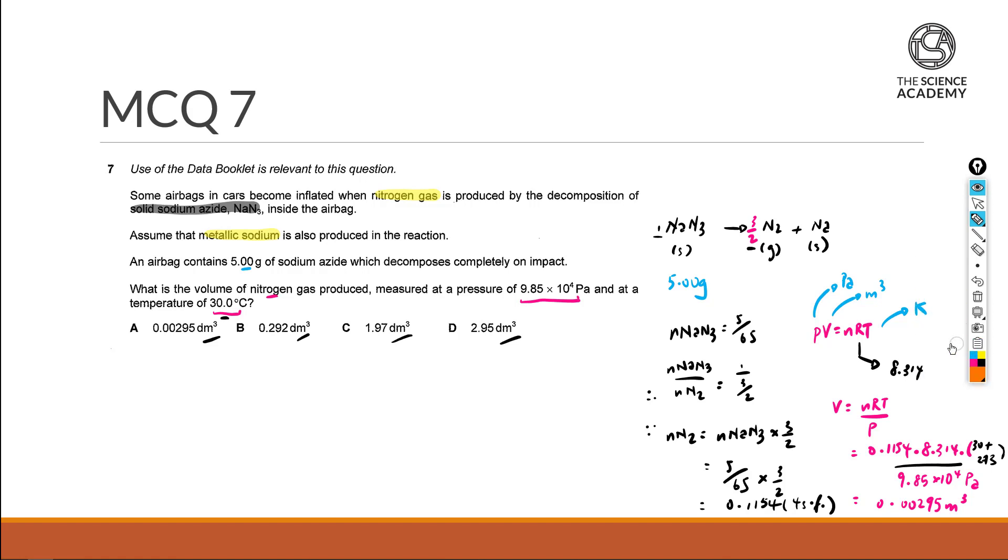Some useful chart to remember over here could very much be your conversion table for volume. If let's say we have our dm³ to convert to meter cube, we multiply by 10 to the power of negative 3. If we have cm³ to convert to meters cubed, we multiply by 10 to the power of negative 6.